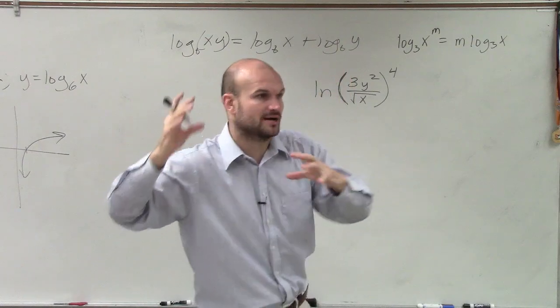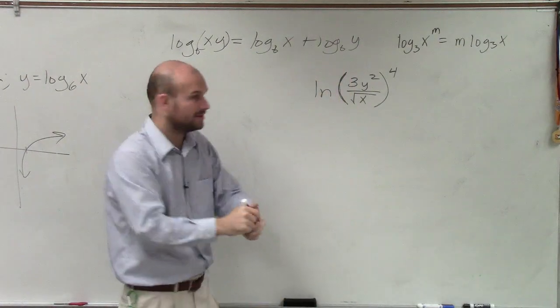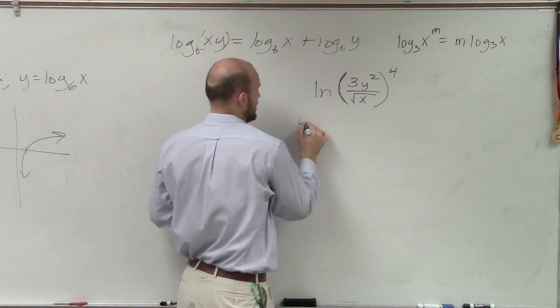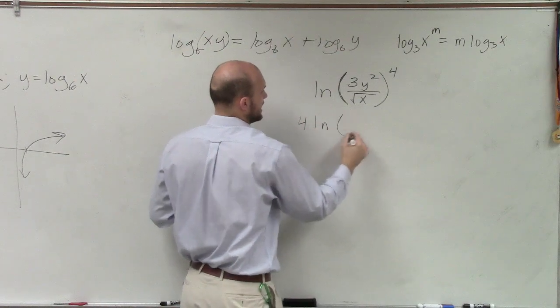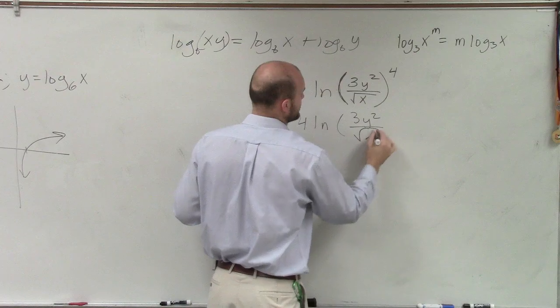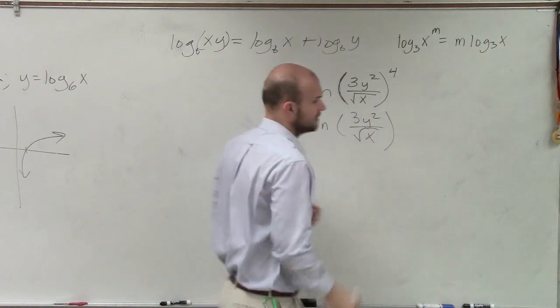So the first thing I'm going to want to do is bring down that power. So if I bring down that power, I will now have 4 times ln of 3y squared divided by the square root of x.